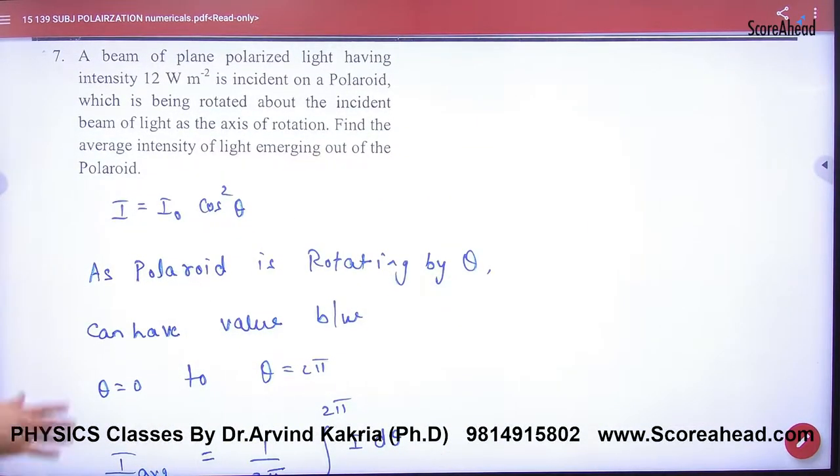Now, question number 7. A beam of plane polarized light having intensity I₀ is incident on a Polaroid, which is being rotated about the incident beam of light as the axis of rotation. Find average intensity of light emerging out of the Polaroid.